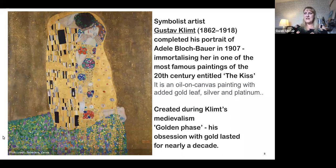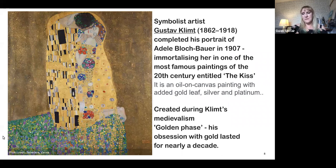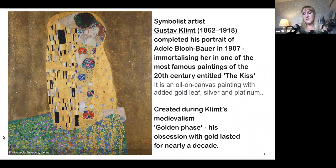Artists are very highly influenced by other creative periods in history. This is a very famous painting by the Symbolist artist Gustav Klimt, painted in 1907 - a portrait of Adele Bloch-Bauer, immortalising her in one of the most famous paintings probably created in the 20th century. It was created during Klimt's golden phase and shows a couple in an embrace expressing desire and reverence. Klimt's obsession with gold lasted for nearly a decade at the turn of the 20th century, when influences were being felt from classical Byzantine and Renaissance art. Klimt's works paid homage to many centuries of art history where gold leaf was a commonly applied pigment, but his work also introduced the avant-garde Viennese style referencing the Arts and Crafts movement, which also influenced the medieval period, and its emergence towards Art Nouveau.